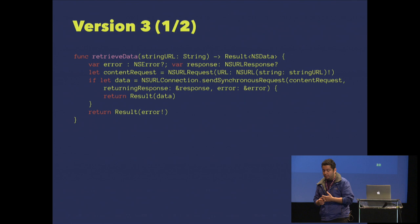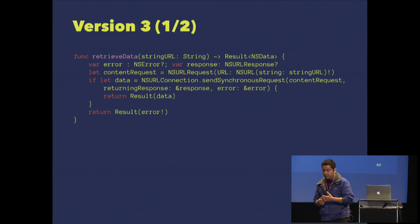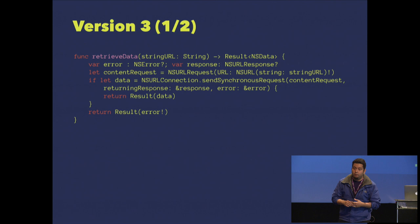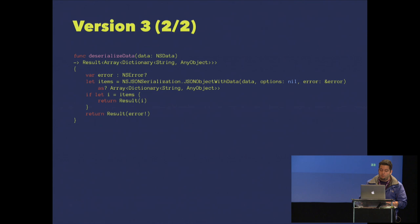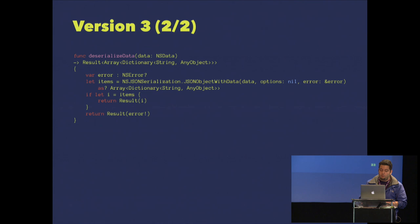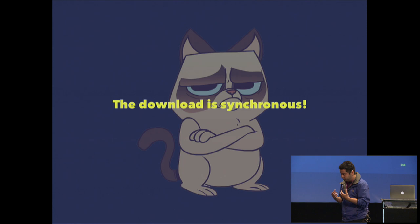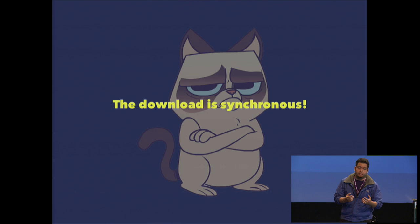Now we have one last problem. If you check the content and the data, I'm using synchronous code — it means I'm blocking the main thread. When I open the application, it freezes for one or two seconds. Then when the data is correctly handled, it's back. We can use the same concept to create asynchronous code that is safe.